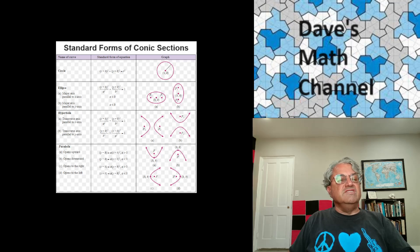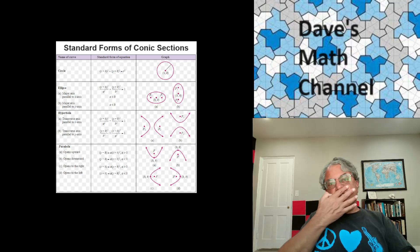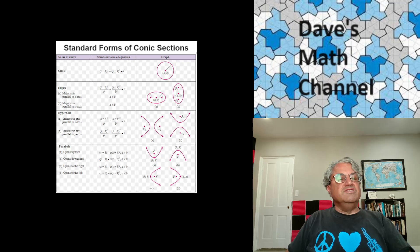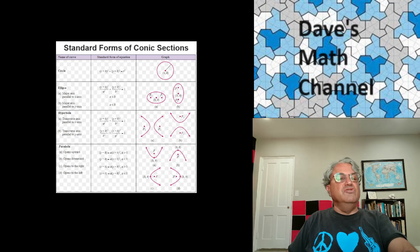That would have a form, I think it's x minus h quantity squared equals 4py. p is now the distance, and parabola has a focus too. And p is the distance of the focus from the vertex. So, and if it opens up along the y-axis, it's x minus h quantity squared equals 4py. Could be minus 4py if it opens down. If it opens to left, you just have to switch the roles of x and y. So now you have y squared, y minus k quantity squared equals 4p x minus h. So anyway, those are the parabola, those are the standard forms of all the conic sections.